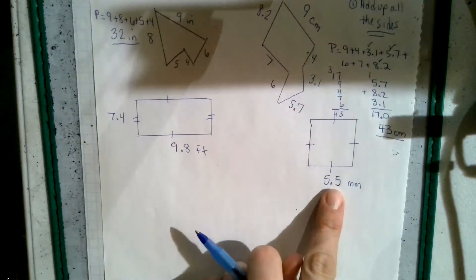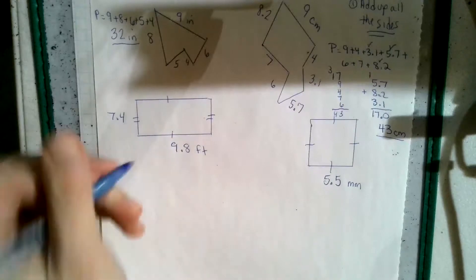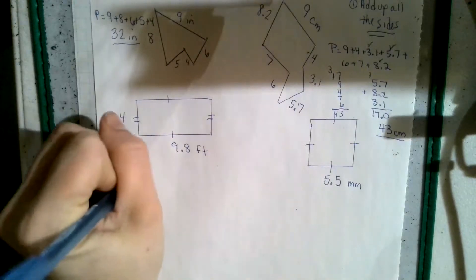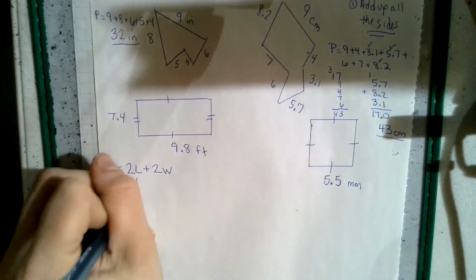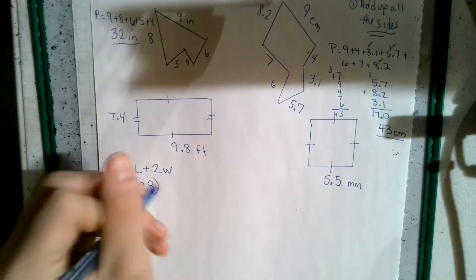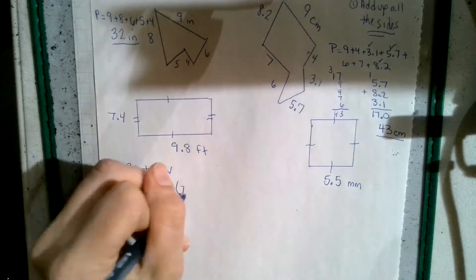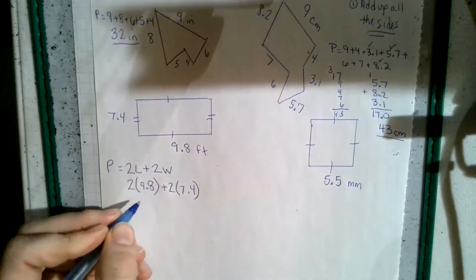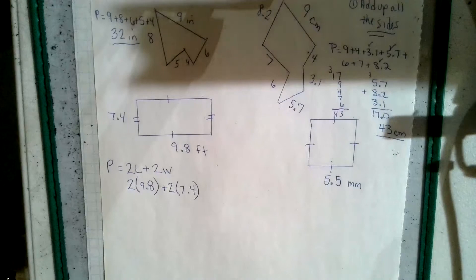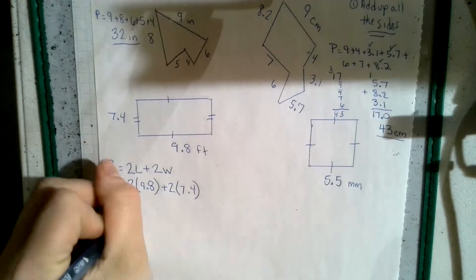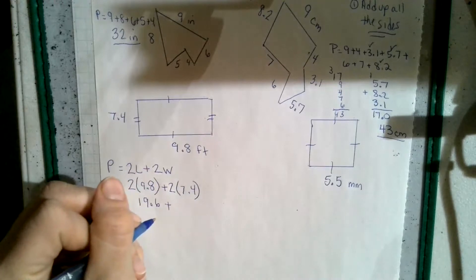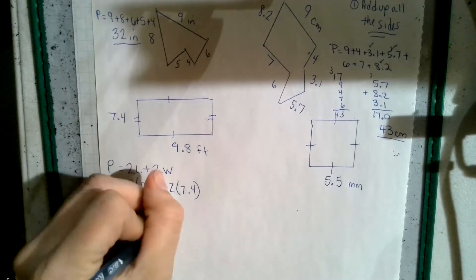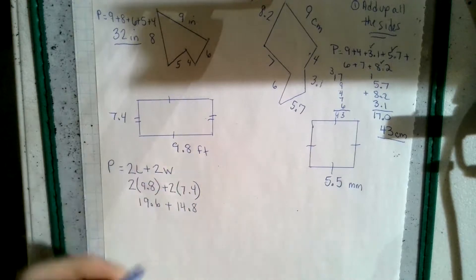Then when we get to the rectangle and the square, this rectangle is opposite sides are equal. There's a formula. Two lengths plus two widths equals perimeter. So we have two times the length, so that's two times 9.8 plus two times the widths, which is 7.4. So we figure out what 9.8 times two is, which this part is worth 19.6. And then we do 7.4 times two, which is 14.8.